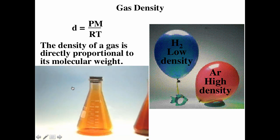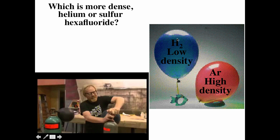The density of bromine, like all gases, is directly proportional to the molecular mass of its molecules. Bromine is diatomic (Br2), with atomic mass ~81, so Br2 has molar mass ~160, compared to nitrogen (N2) at 28, making bromine about five times more dense than air. Helium is much less dense than sulfur hexafluoride (SF6), which has a much larger molar mass and is therefore more dense.